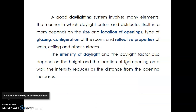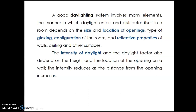With this amount of daylighting, we need to take care of a few aspects which will help us in having very good lighting inside. This includes the size and location of openings, the glazing used in the opening, the configuration of the room, and the reflective properties of walls, ceilings, and other surfaces. The intensity of daylight entering a space depends on the height and location of openings and the distance between the space and the opening.